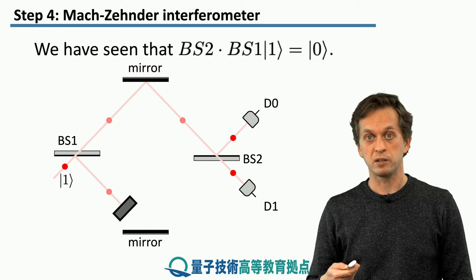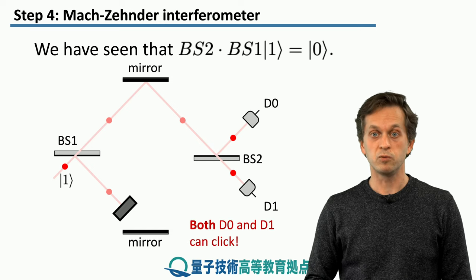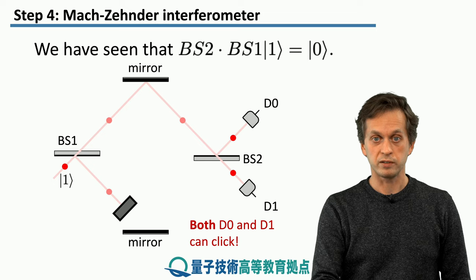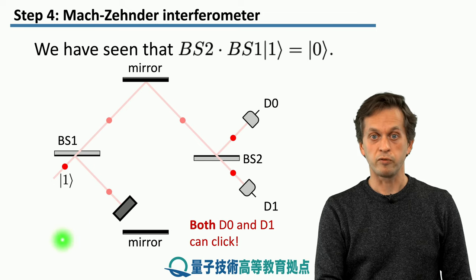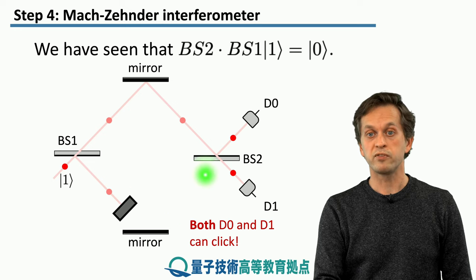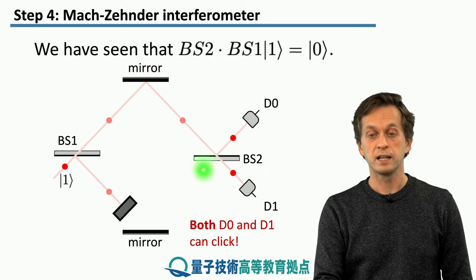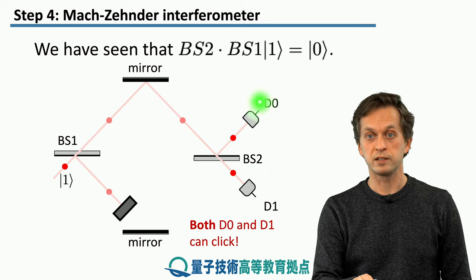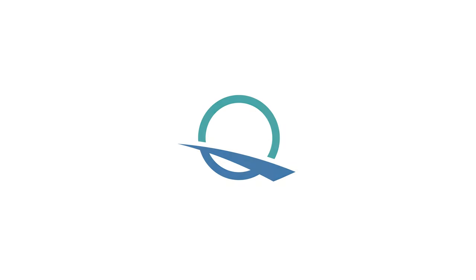So what we have effectively done by blocking this path of photon in the bottom of the Mach-Zehnder interferometer is we have prevented interference from taking place at beam splitter 2. That is why we see both possibilities D0 and D1.